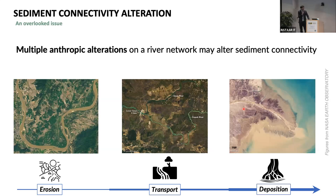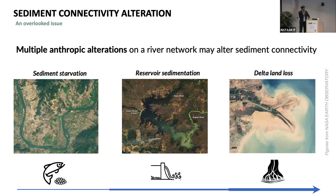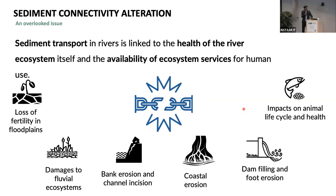We also know that introducing any kind of alteration on the river system — whether it be the construction of a reservoir directly on the river, or changes on the catchment like land use change or deforestation — is bound to have many effects on the natural flow of sediment. These effects, in turn, are responsible for a variety of often unpleasant effects felt across large spatial and temporal scales.